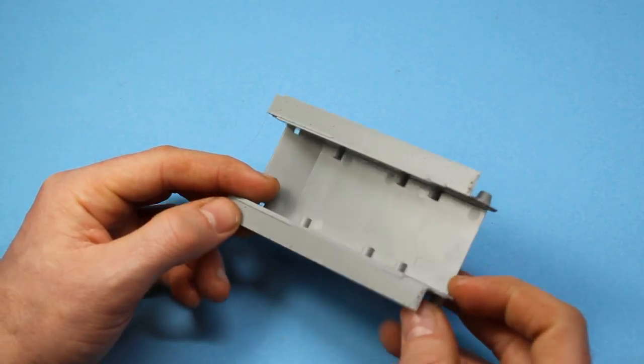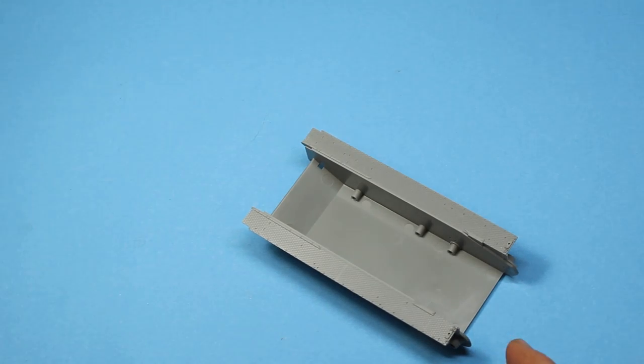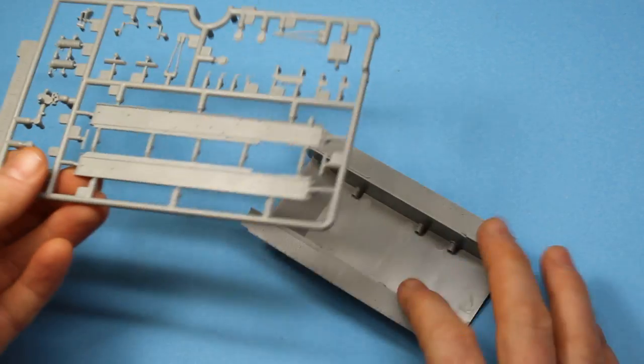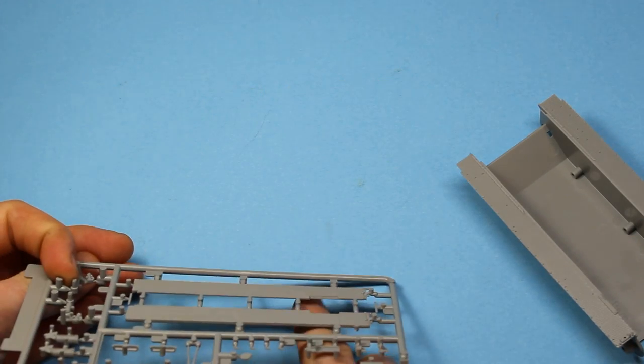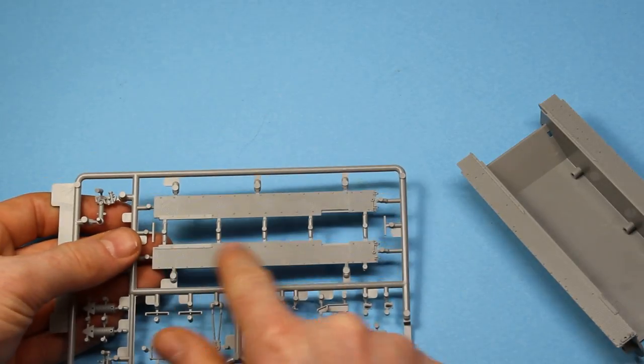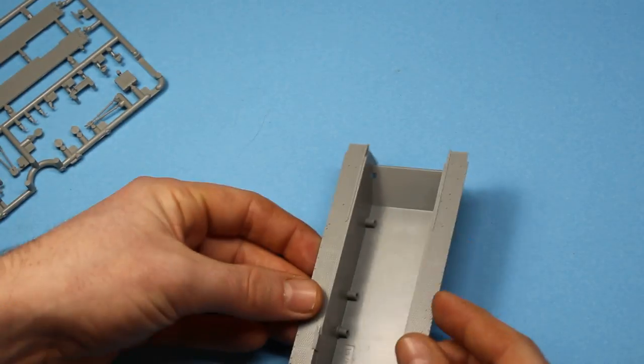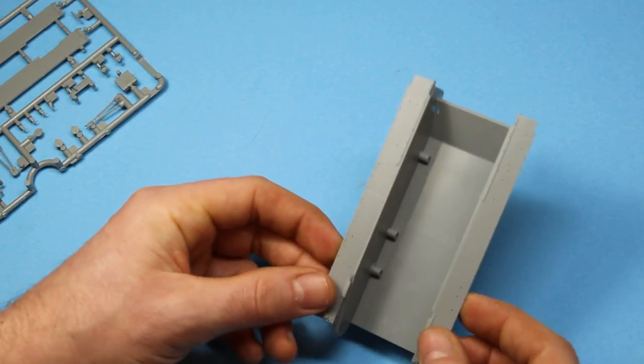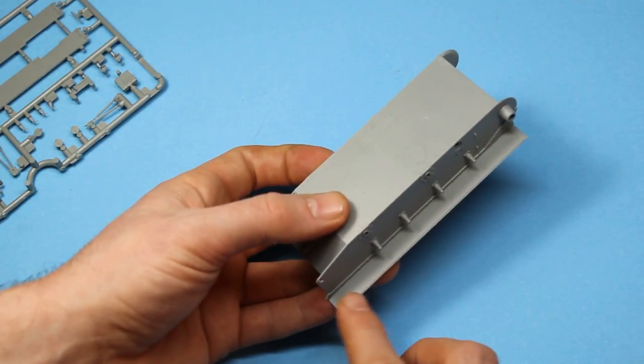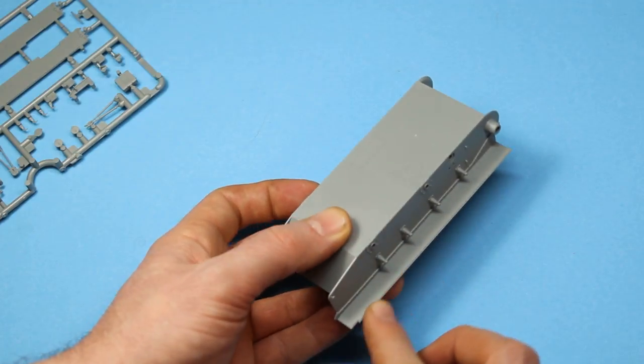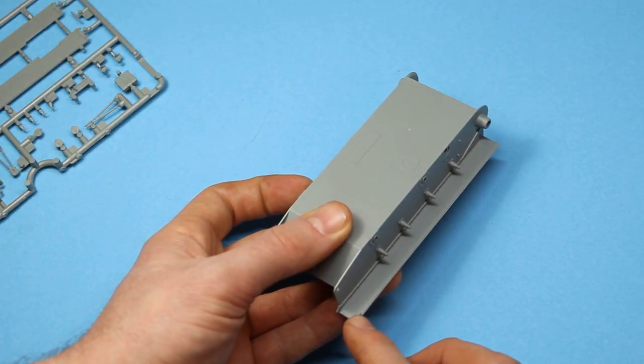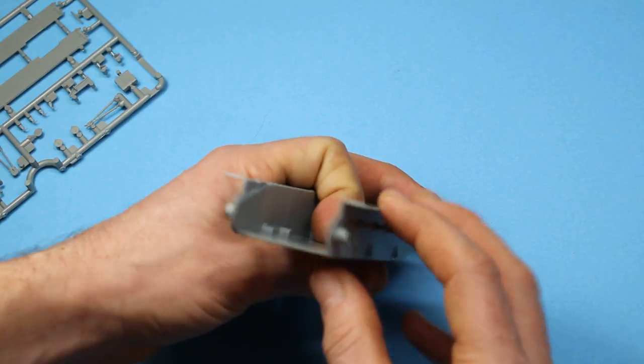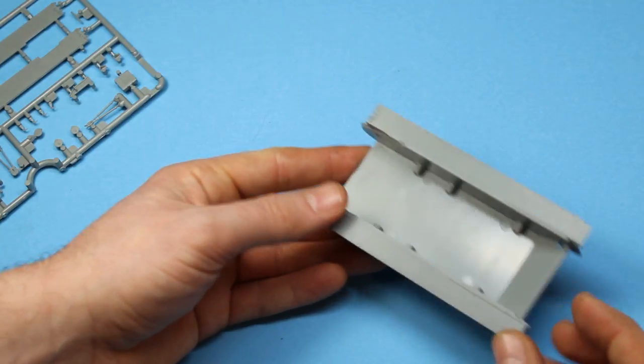Going back to those fenders that I showed earlier, so these fenders are not to be used here. Although they're very nice, you actually have fenders already molded onto the side of this one piece hull here. Then the etched metal pieces are used to give that an edge, so that will give that a nice fine edge and make it look sort of scale thickness. That's a nice touch there from Dragon.